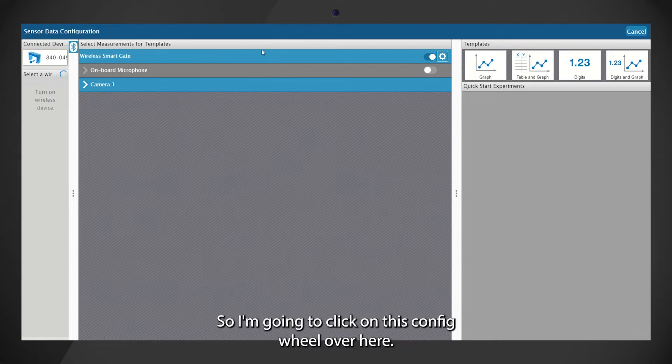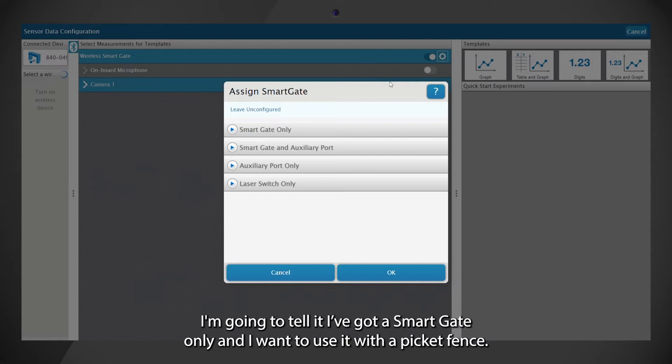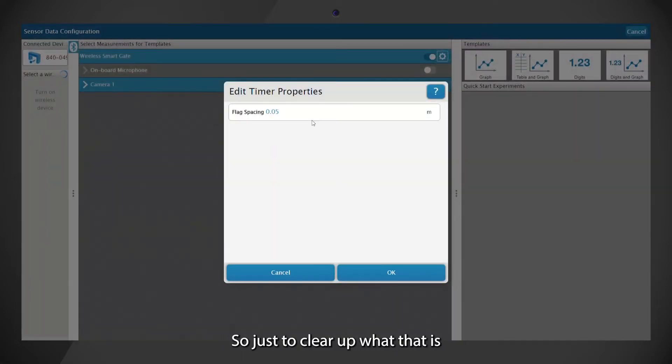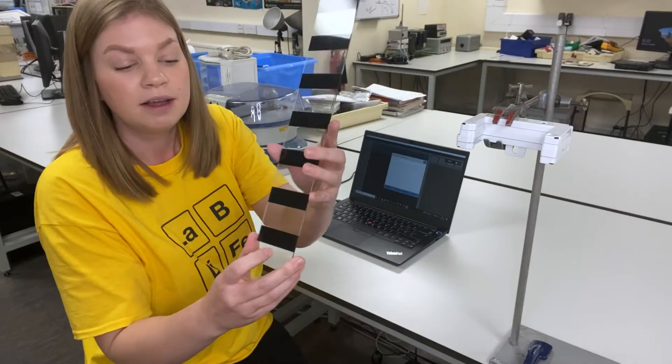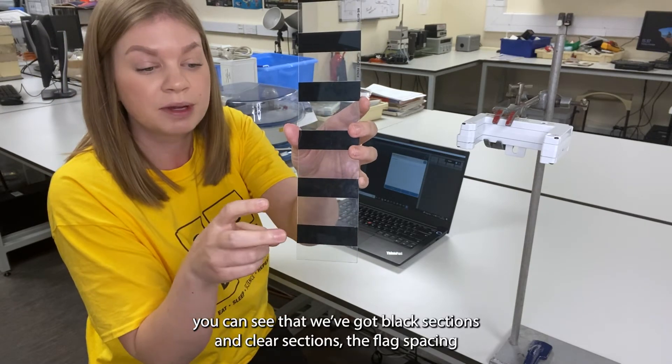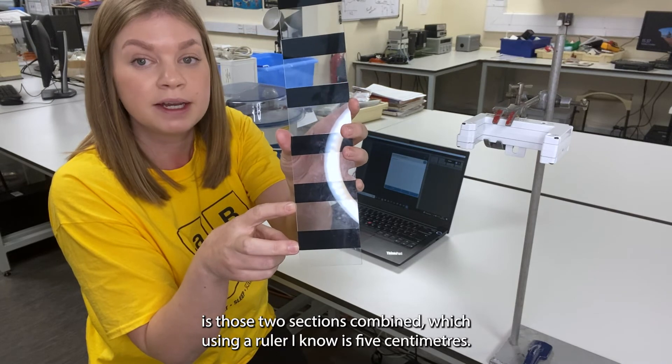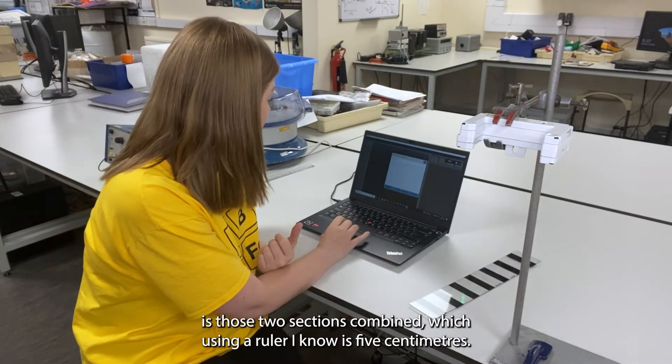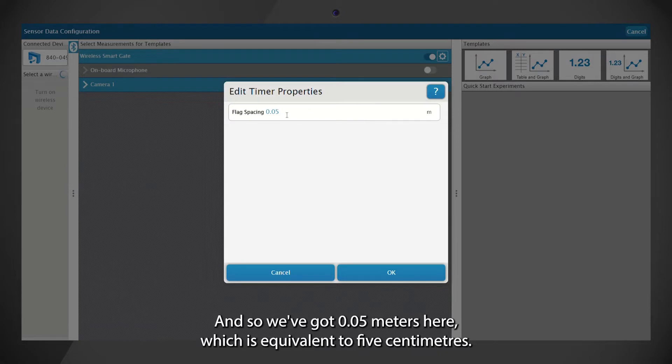Okay, so we just need to tell the software what we want the smart gate to do. So I'm going to click on this config wheel over here. I'm going to tell it I've got a smart gate only and I want to use it with a picket fence. Click here and tap OK. It's asked me for the flag spacing, which is the black section plus clear section combined, which using a ruler I know is five centimeters.